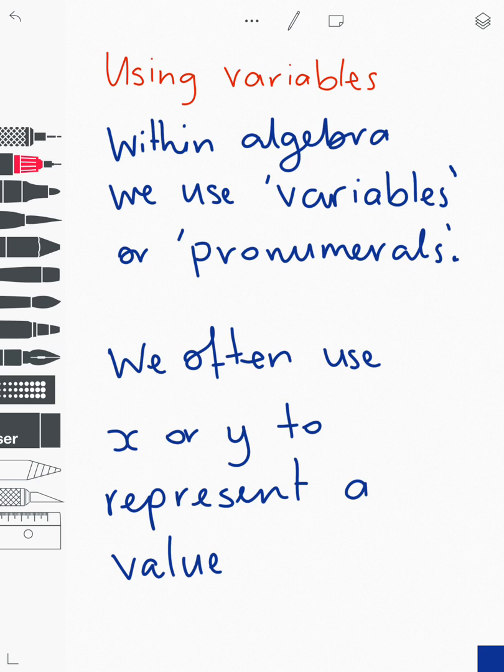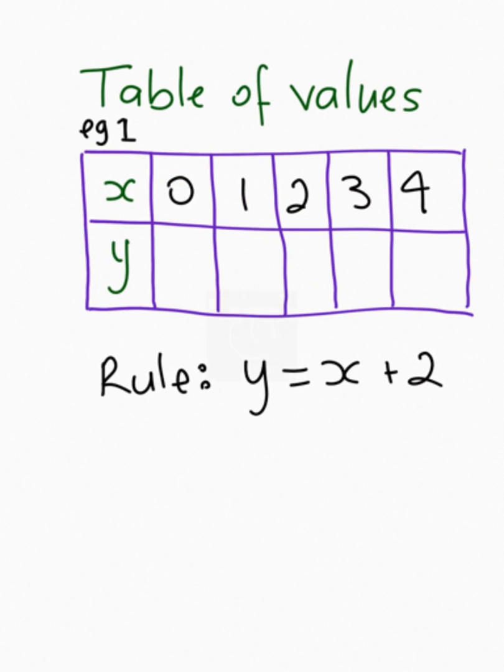Now, the most common variables or pronumerals we use are x or y. That doesn't mean that we can't use others, they're just the most common. We can use any letter or any symbol, and we use x or y to represent a value. The most common thing we need to do with variables is complete a table of values. So let's go do an example of a table of values.